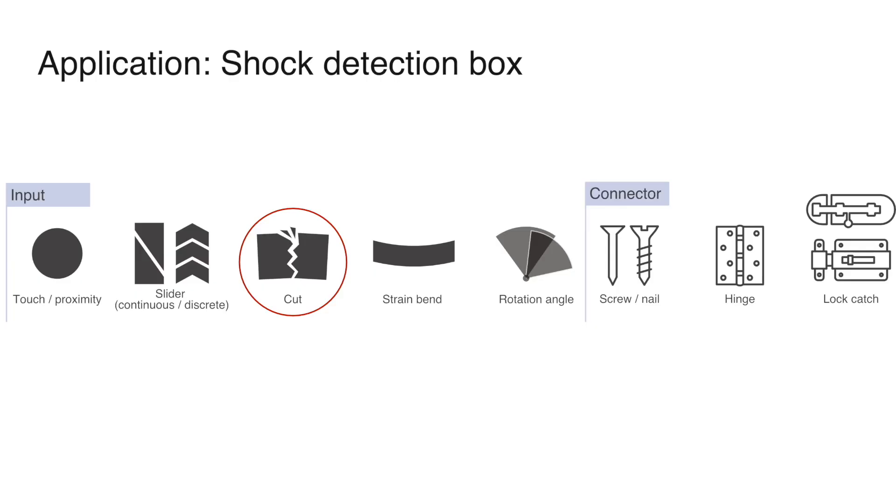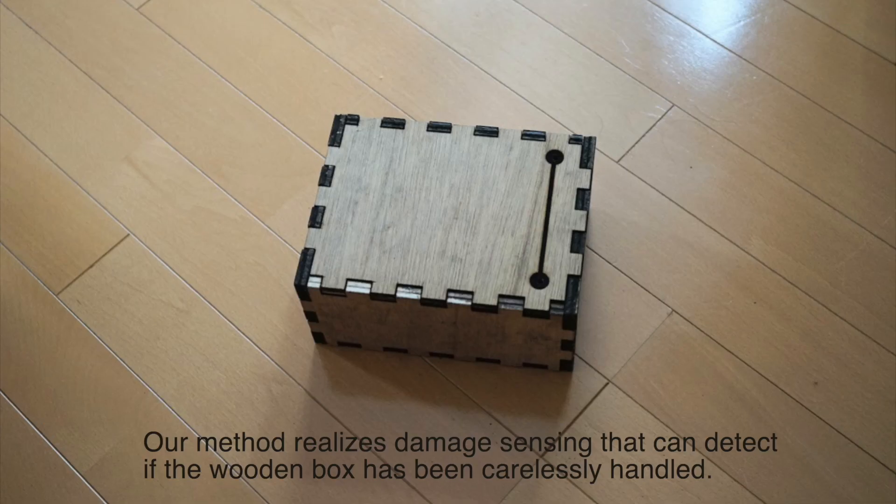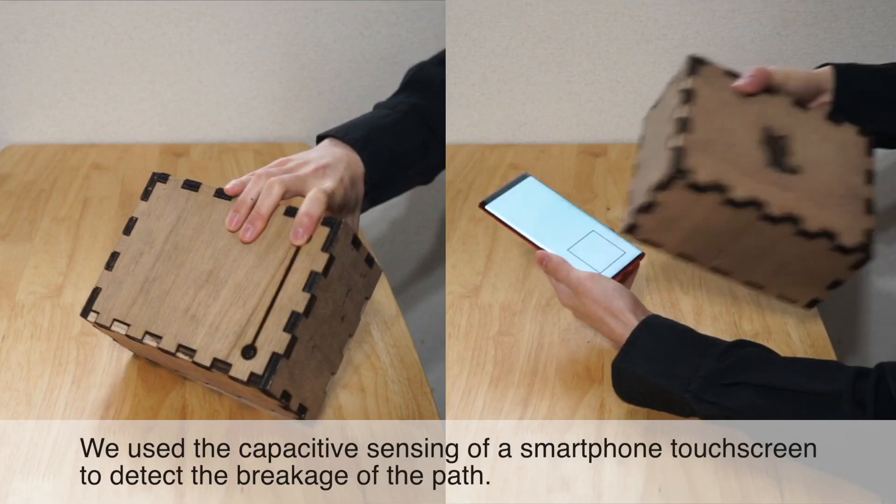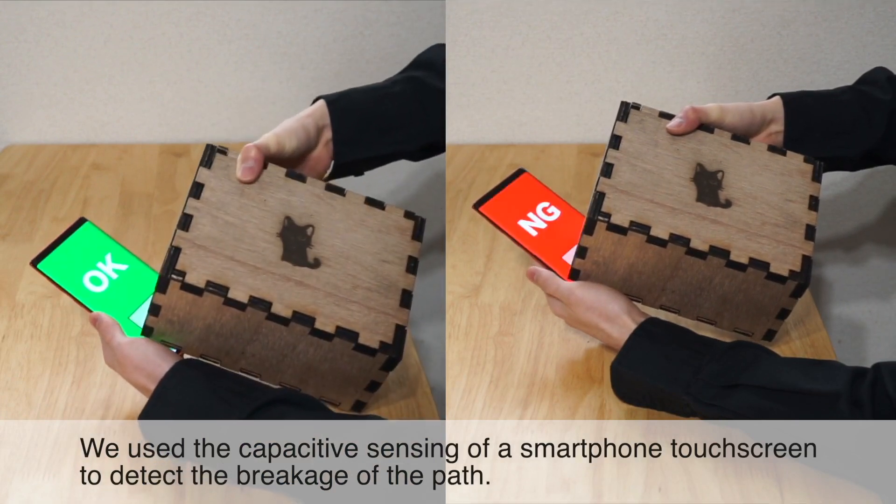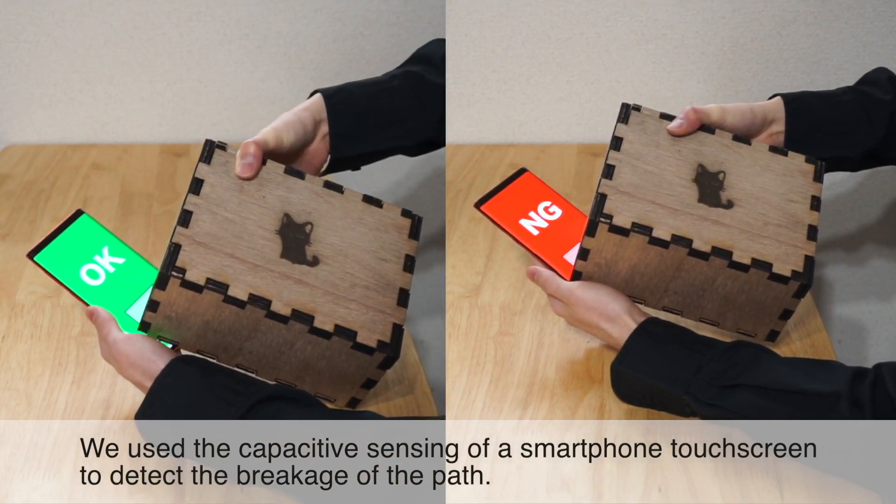Application to shock detection box. Our method realizes damage sensing that can detect if the wooden box has been carelessly handled. We use the capacitive sensing of a smartphone touch screen to detect the breakage of the path.